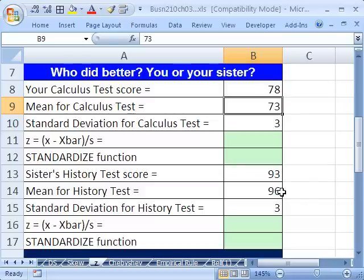Whereas look, your sister got 96. If you subtract one standard deviation, you would get 93. So she's exactly one standard deviation below, and you're more than one standard deviation above. That's what we're talking about, relative position.